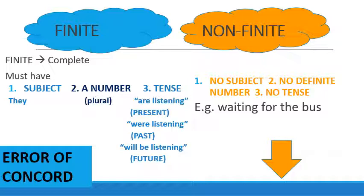Non-finite verbs are verbs that don't have a subject, don't have a number, and don't have a tense. For example, if you see the phrase 'waiting for the bus,' we want to ask the question: who was waiting for the bus? We don't actually know, so this is definitely non-finite. The word 'waiting' is a non-finite verb. We also have a concept called the error of concord, which just means that the number of the verb needs to match its tense.